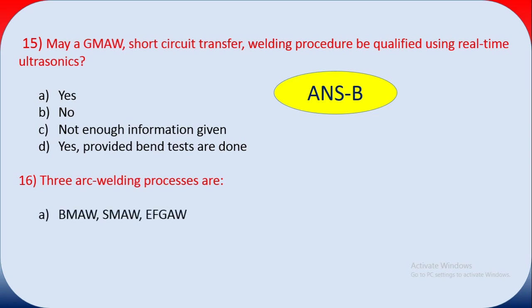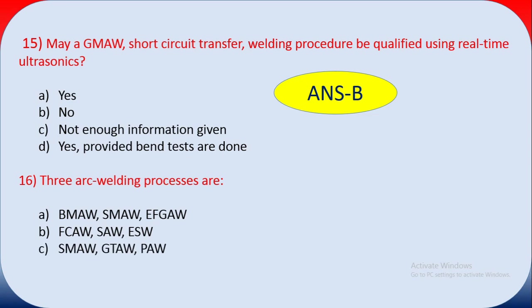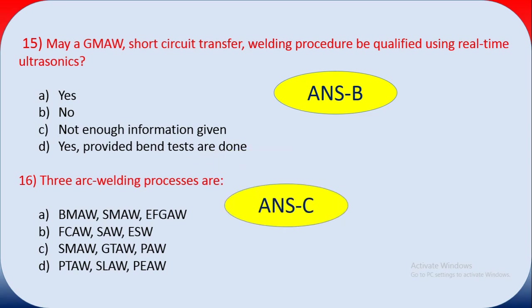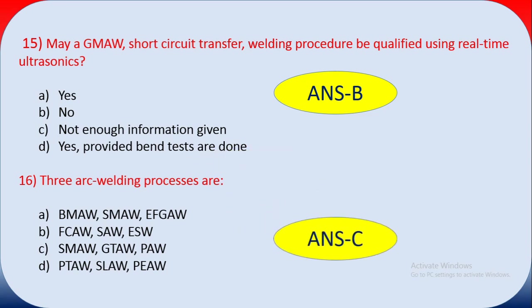Question sixteen: which of the following lists three arc welding processes? Options include GMAW, FCAW, SAW, ESW; SMAW, GTAW, PAW; and PTAW, SLAW, EEW. The answer is C — SMAW (shielded metal arc welding), GTAW (gas tungsten arc welding), and PAW (plasma arc welding).